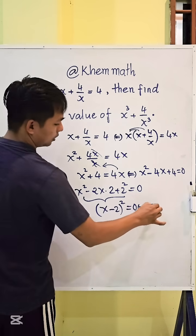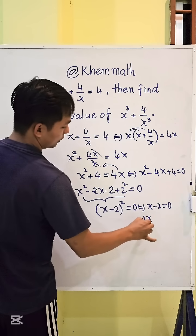So we get x minus 2 equals 0. We get the value of x equals 2.